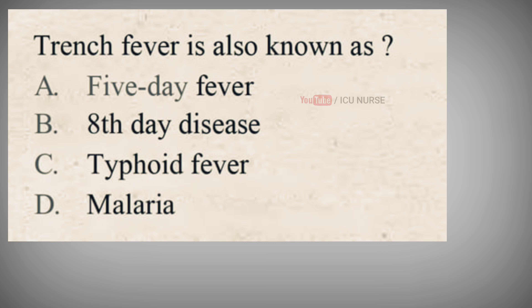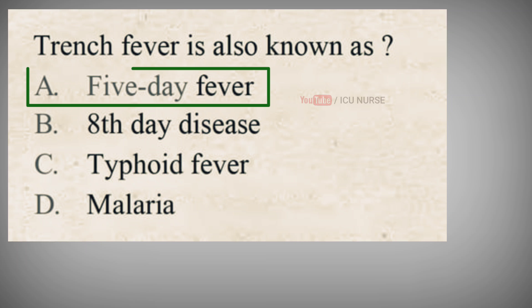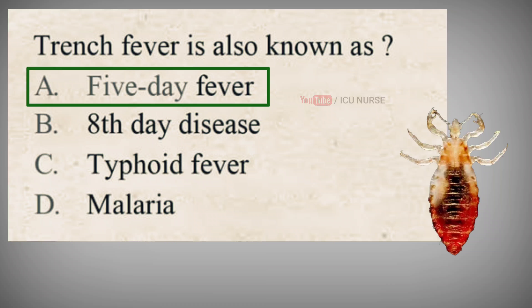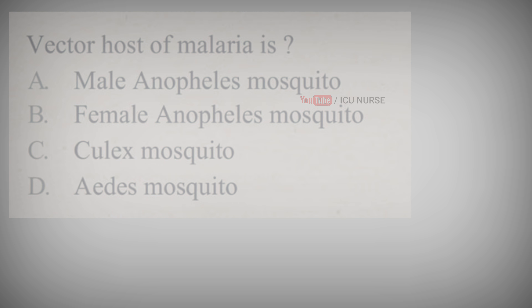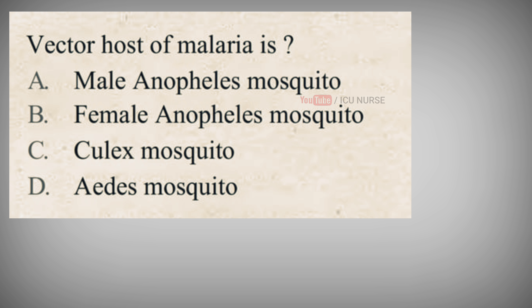Trench fever is also known as? A. 5-day fever, B. 8-day disease, C. Typhoid fever, D. Malaria. The correct answer is A. 5-day fever. Trench fever is a bacterial disease transmitted by body lice. The symptoms include relapsing fevers, muscle aches, pain behind the eyes, severe headache, joint pain, rash, liver and spleen enlargement, and pain in the shins.